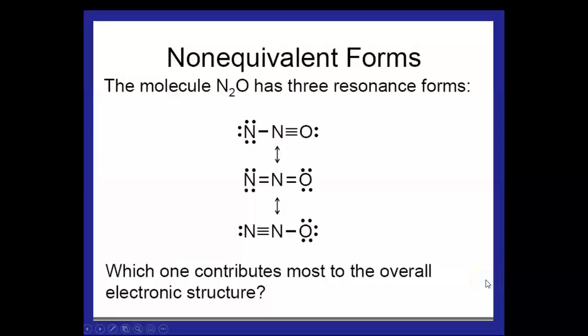Okay, the molecule N2O has three forms, three ways you can draw the Lewis structure. Are any of them more correct than the others? Yeah, it is, but they can all be drawn that way. So here you have a triple bond between the nitrogen and the oxygen, and a single bond between the two nitrogens. Remember, oxygen is the most electronegative of these atoms.